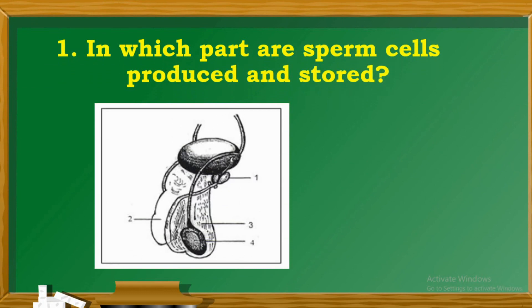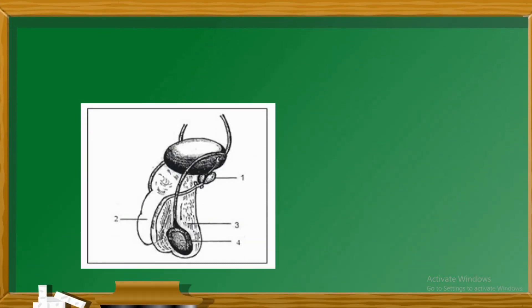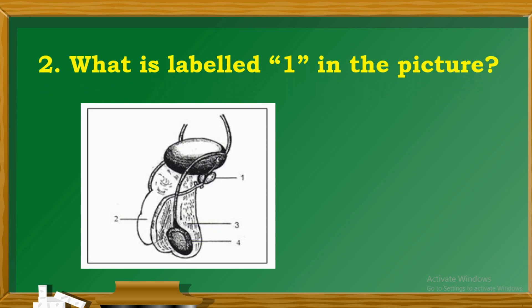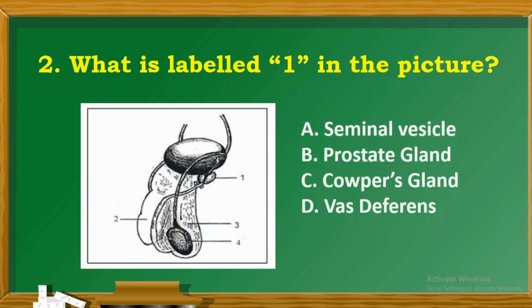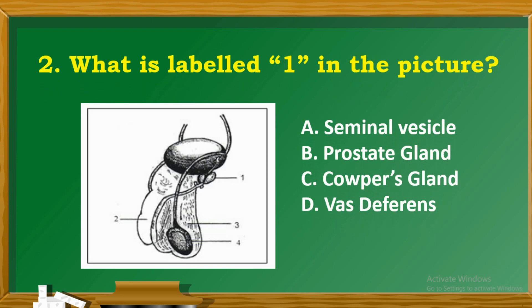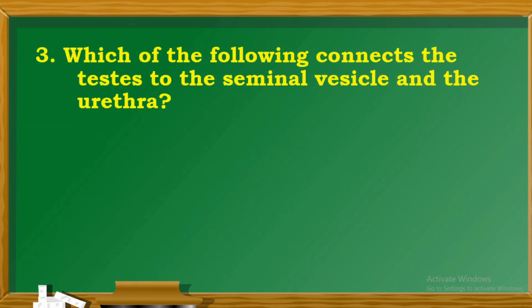Question 1: In which part are sperm cells produced and stored? Question 2. Question 3: What is labelled one in the picture? Question 3. Which of the following connects the testes to the seminal vesicle and the urethra?